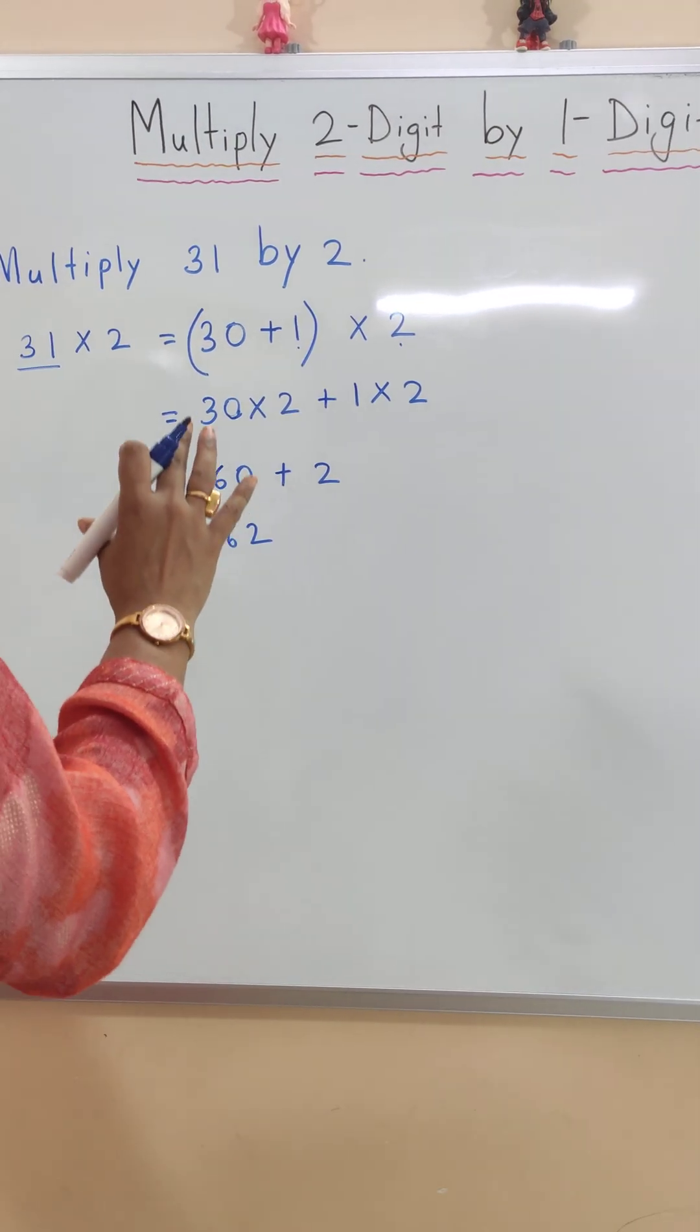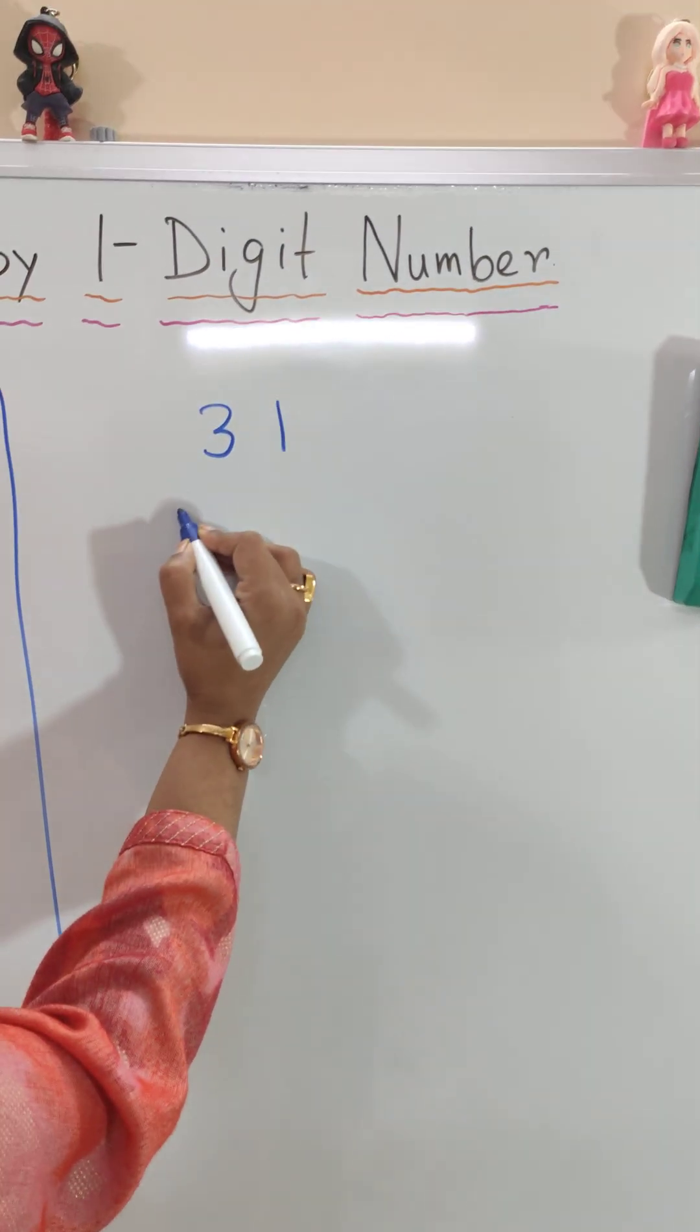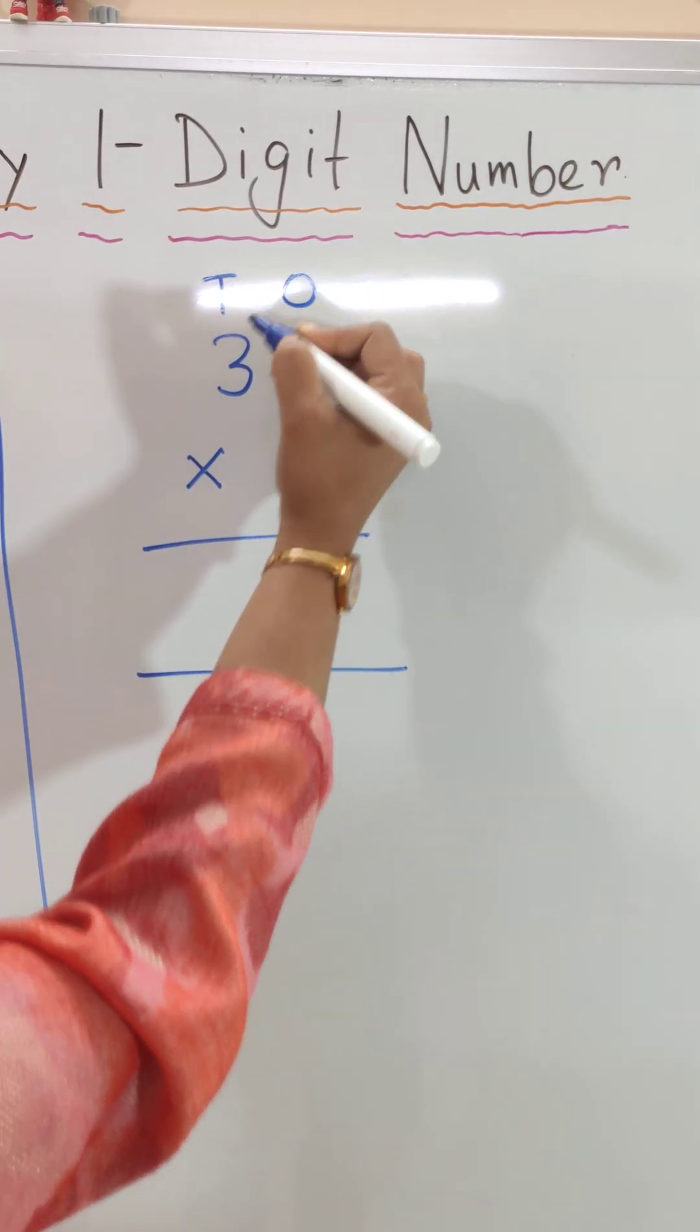Now I will show you the short method. So 31 times 2. Ten's place and one's place.